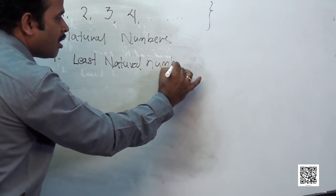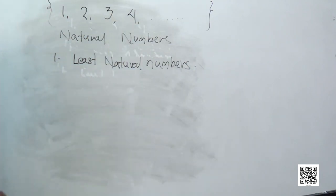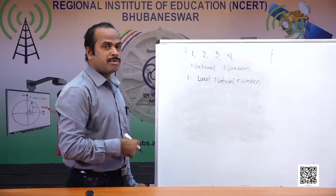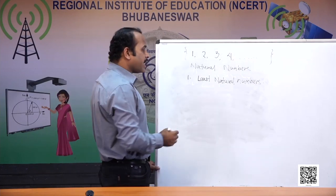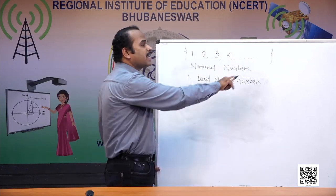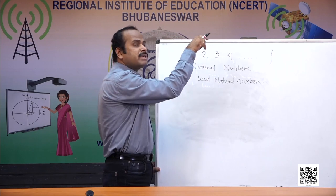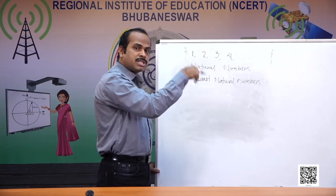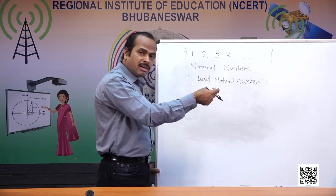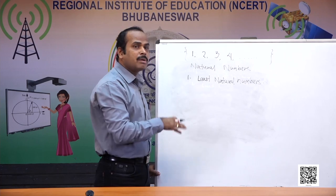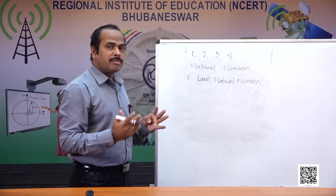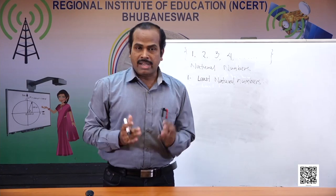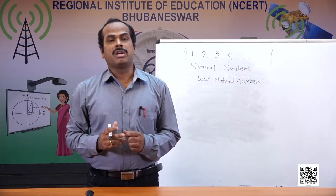Can you say what will be the greatest natural number? We cannot say, because there is no greatest natural number. Whenever you tell some natural number, I will add one and you go to the next natural number. So there is no greatest natural number. The first numbers we came across in life are counting numbers, or natural numbers — starting with one and moving endlessly onwards.